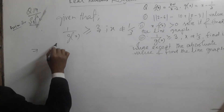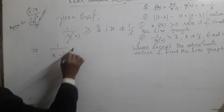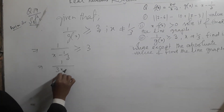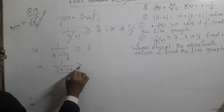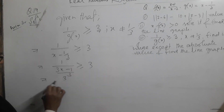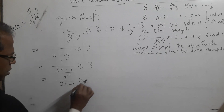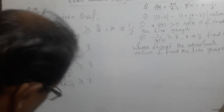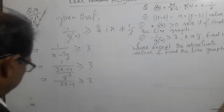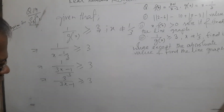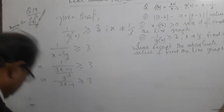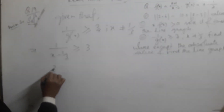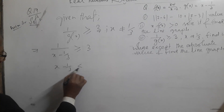j(x) depends on 1/(x minus 1/3) greater than or equal to 3. That implies 1 divided by (3x minus 1)/3 is greater than or equal to 3. That means 3 divided by (3x minus 1) is greater than or equal to 3. We use the alternative method: the modulus of (x minus 1/3) is less than or equal to 1/3.